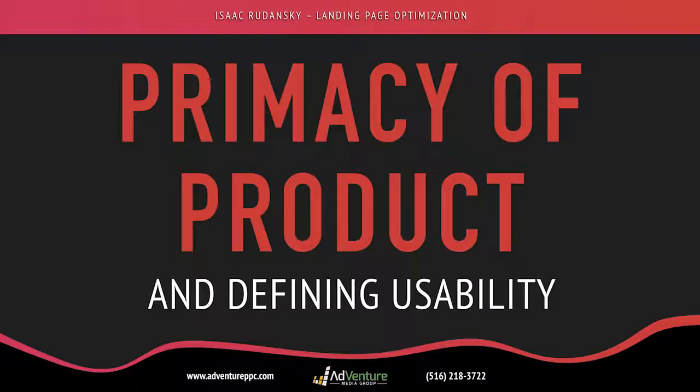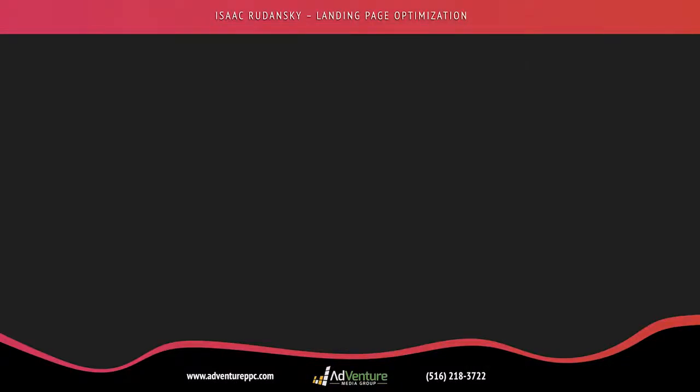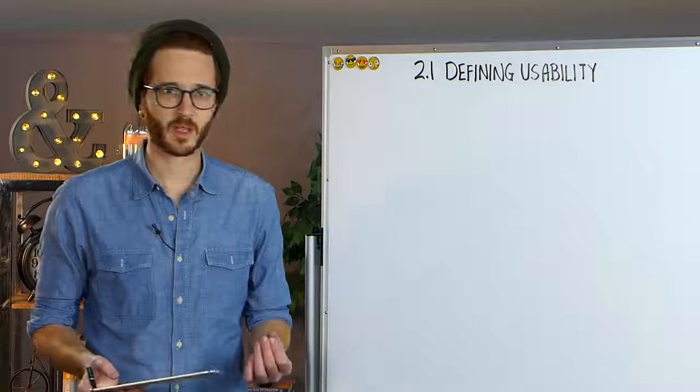We're going to talk about the primacy of product and defining usability. I want to start just from the beginning and work from the ground up and talk about product. So nothing we do obviously is going to be more important ultimately than having a product that people actually want to buy and people actually need. So there has to be a market for what you sell. That's the first important thing.